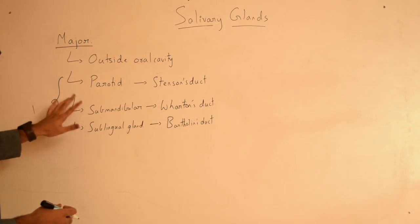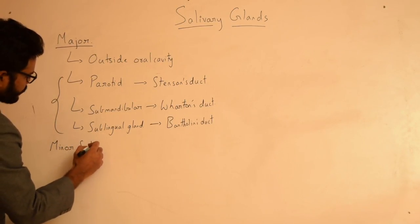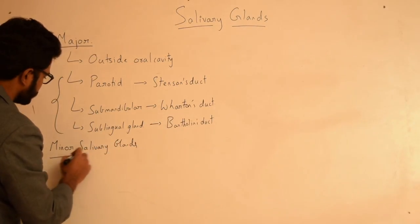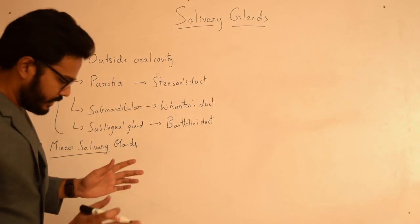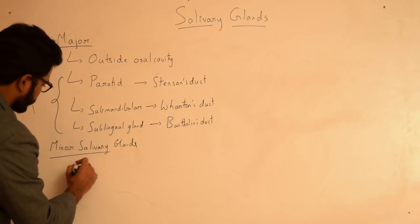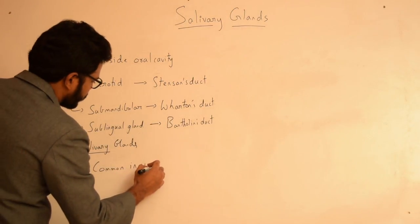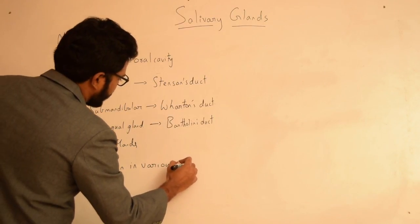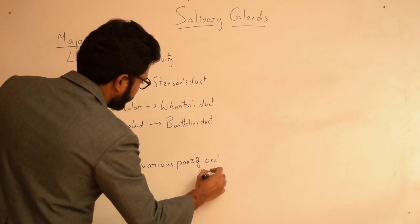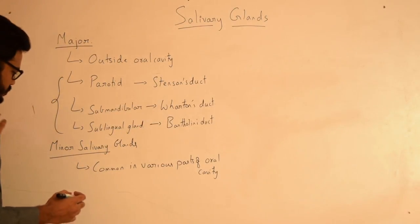Apart from this, we have various minor salivary glands. These minor salivary glands are present all over the oral cavity — that's very important. So they are present all over the oral cavity except in a few regions. Minor salivary glands are common in various parts of the oral cavity; however, they are absent in certain specific areas.